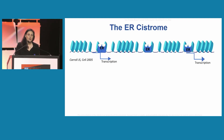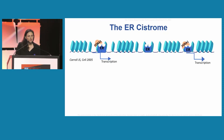The term ER cistrome was coined by Miles Brown from DFCI. When Jason Carroll was in Miles' lab, they showed that ER binds mainly in enhancer regions, and most of ER binding is dependent on chromatin opening by FOXA1. Using the ChIP sequencing assay, we can identify the genome-wide binding sites of the transcription factor. When we integrate that data together with transcriptomic data, we can identify the direct target genes of the transcription factor.